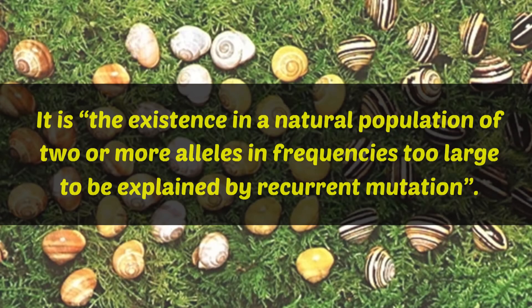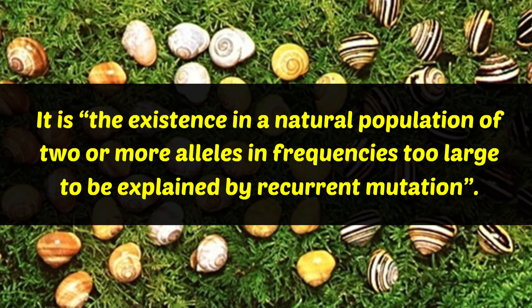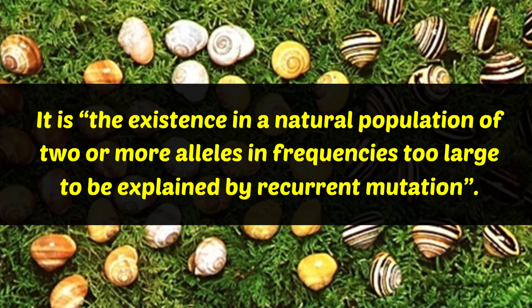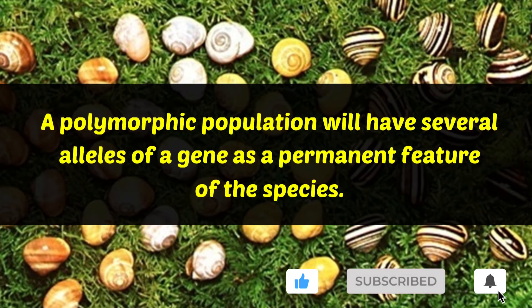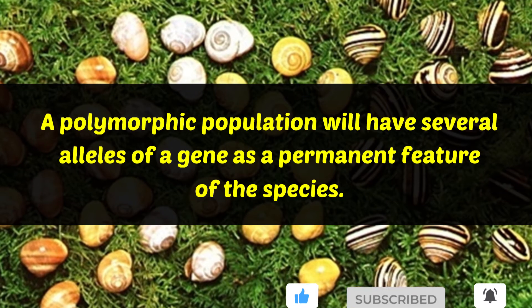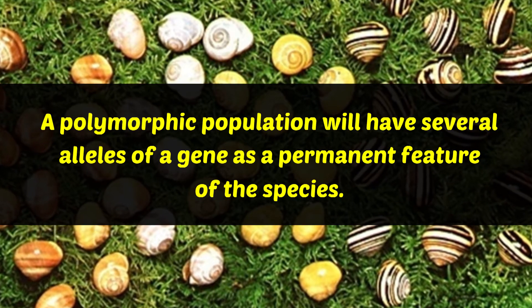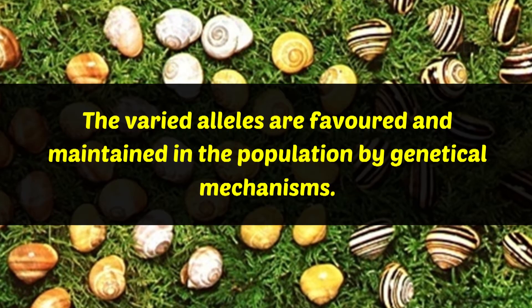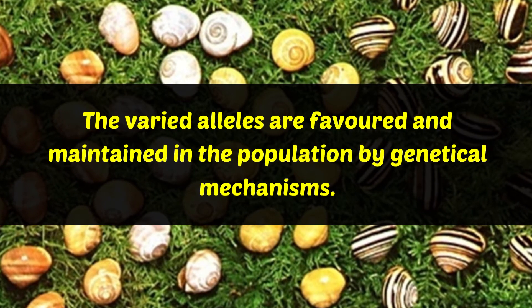What is polymorphism? It is the existence in a natural population of two or more alleles in frequencies too large to be explained by recurrent mutation. Thus, a polymorphic population will have several alleles of a gene as a permanent feature of the species. The varied alleles are favoured and maintained in the population by genetical mechanisms.